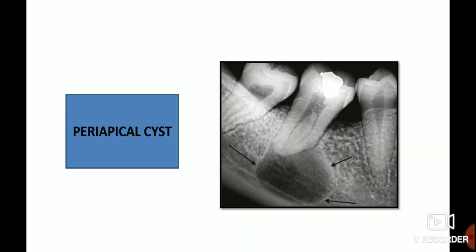Now let me explain another radiograph, which is a case of periapical cyst. Here there is periapical radiolucency measuring greater than 1.6 centimeters and lined by a corticated border, which is suggestive of periapical cyst.